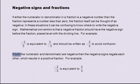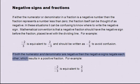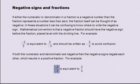If both the numerator and denominator are negative, then the negative signs negate each other, which results in a positive fraction. For example, minus two divided by minus three is equivalent to two divided by three.